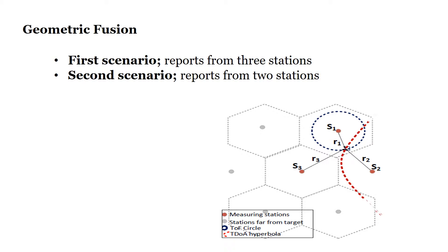In the rest of this talk, we consider two different scenarios and derive and compare results of both. In both scenarios, we restrict ourselves to two-dimensional geometries and convert time-of-flight and time-difference-of-arrival measurements to corresponding range and range differences. Geometrically, the time-of-flight measurement can be represented by a circle around a serving base station, while the time difference of arrival is represented by a hyperbola with foci at the two neighboring base stations.